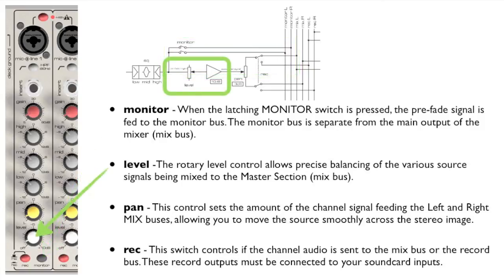The signal then goes through the fader, controlled by the level knob, and then through the pan knob, which controls the stereo positioning of the mono signal.